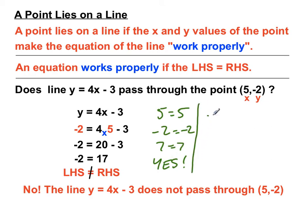But, if we get something like minus 7 equals 12, or 5 equals 8, or, like in this case, minus 2 equals 17, we would conclude, no. The point doesn't lie on the line, the line doesn't pass through the point, and the point doesn't satisfy the equation.